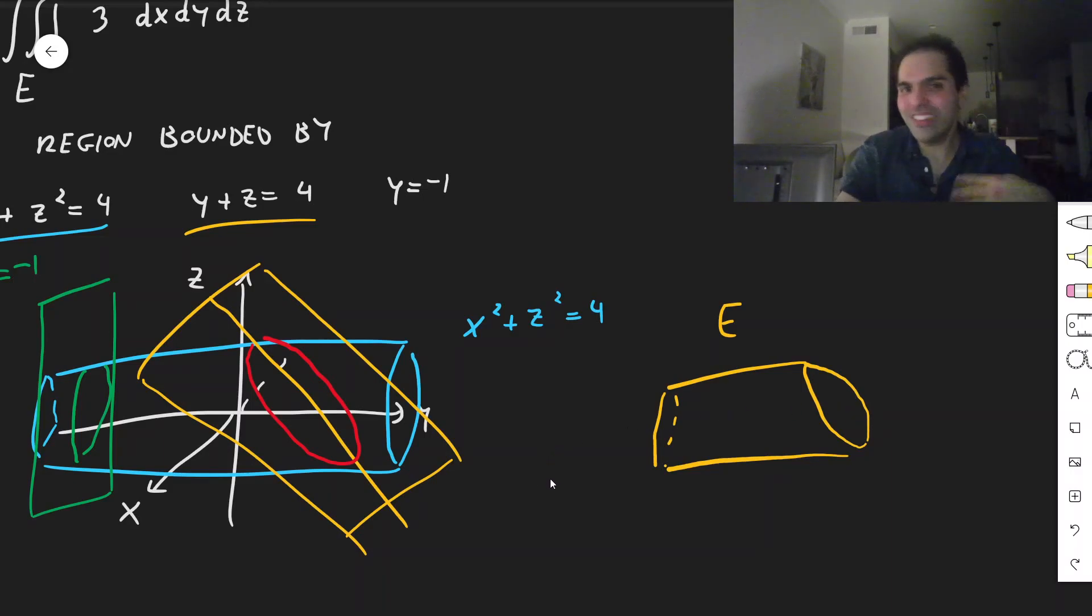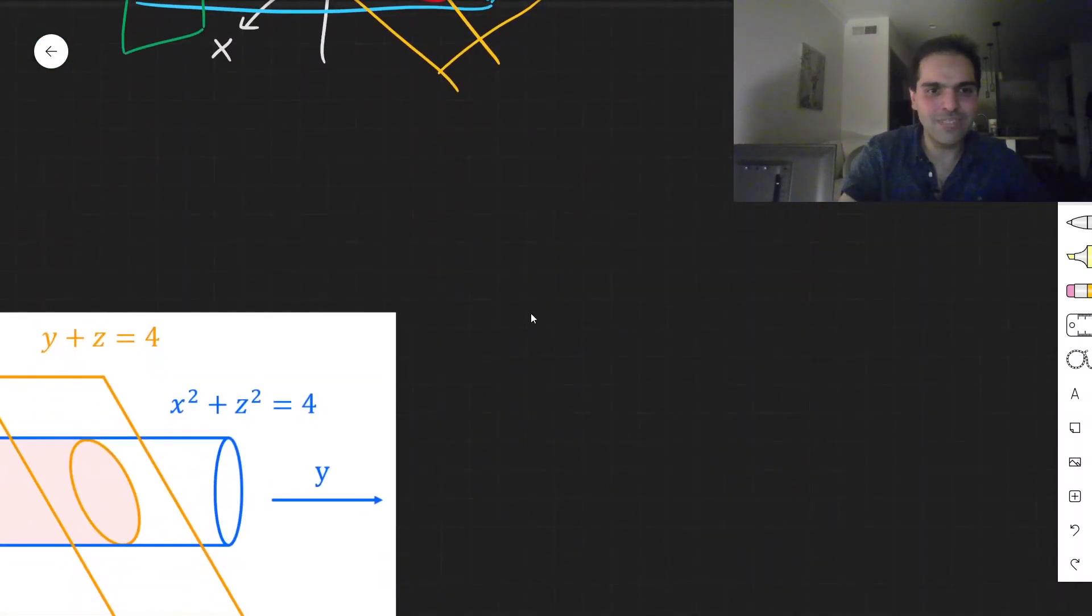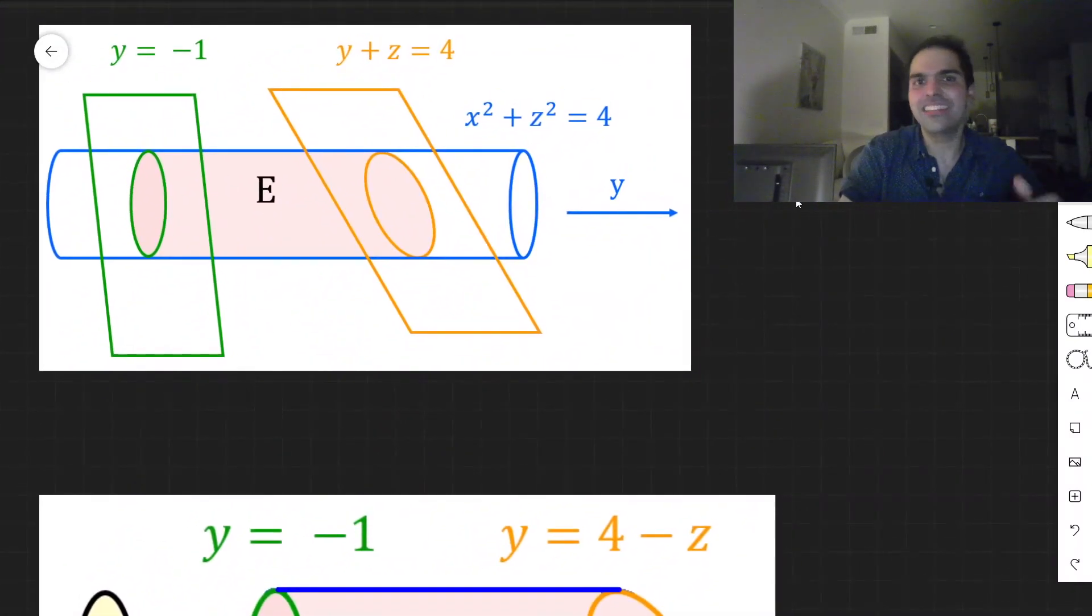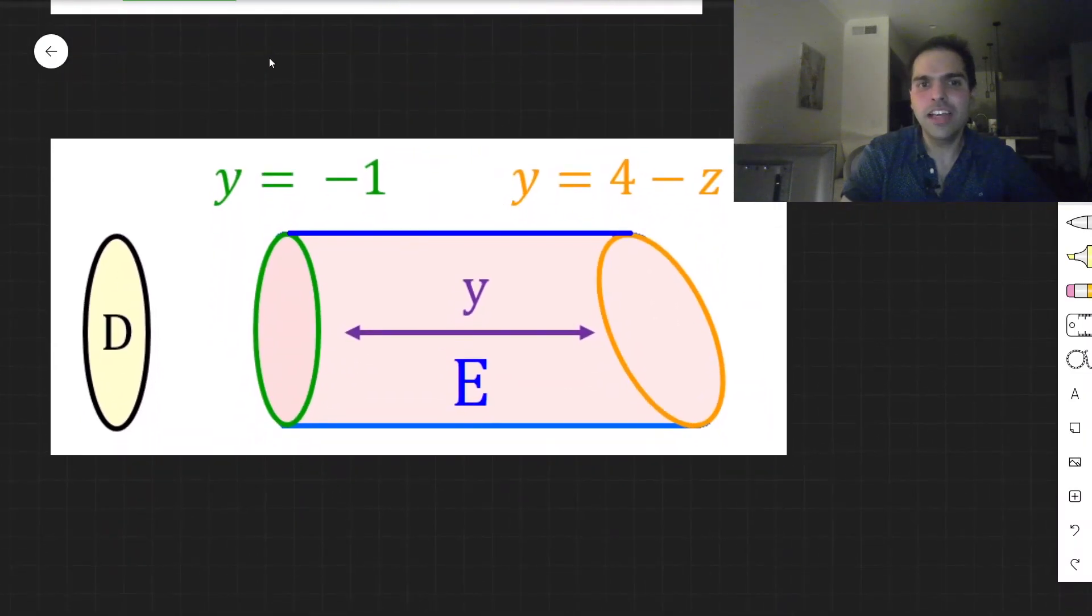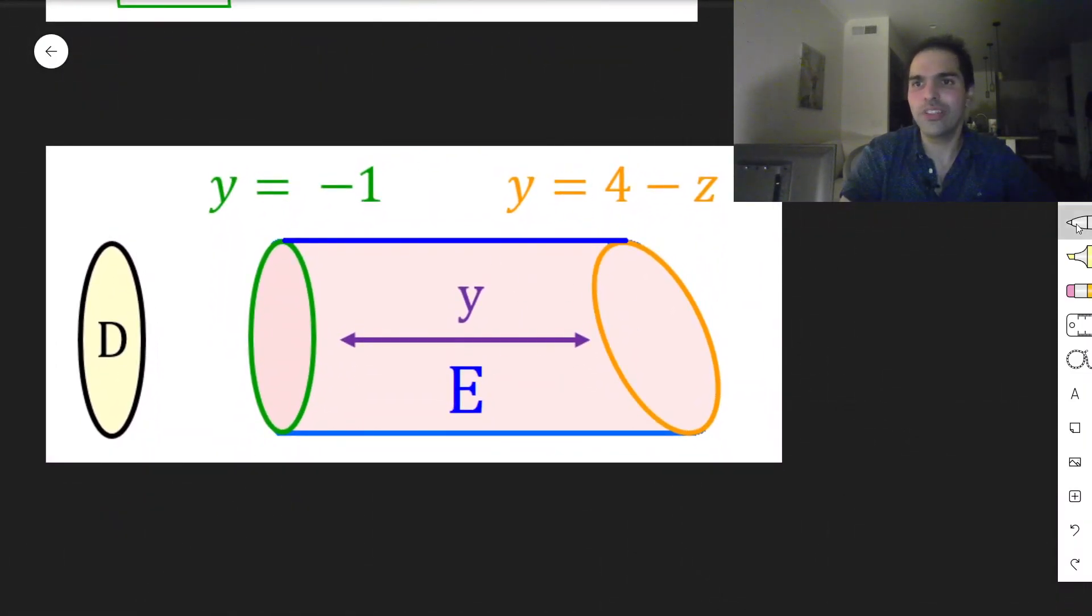And as usual, let me show you a nice computerized picture. So again, we had this cylinder, x squared plus z squared equals 4. In the y direction, you cut it diagonally with y plus z equals 4, and you cut it straight with y equals minus 1, and you end up getting this cannoli kind of shape. All right, that was the first thing. So draw a picture.